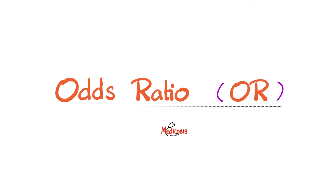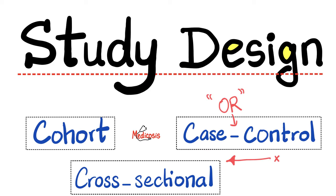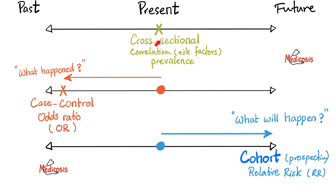Now let's turn our attention to the odds ratio. In my last statistics video, we talked about study design. Different types of observational studies include cross-sectional study, case control study, and cohort study. Cross-sectional studies are concerned with the present only — for example, do you have type 1 diabetes and Hashimoto thyroiditis? This helps us find risk factors and prevalence, though remember that correlation is not the same as causation.